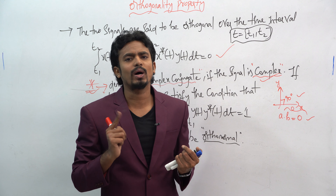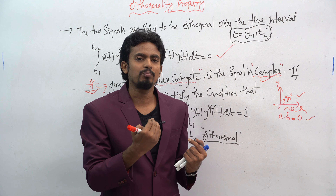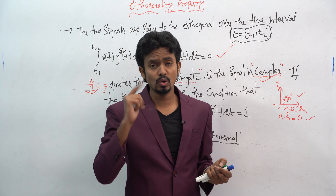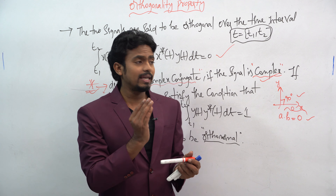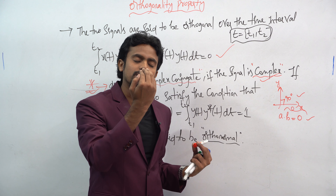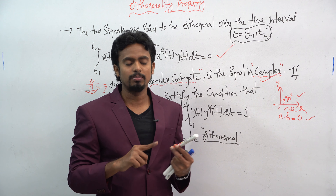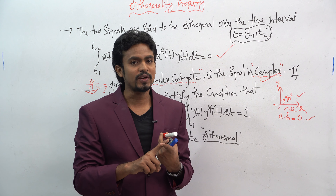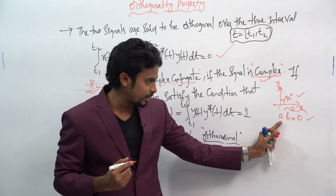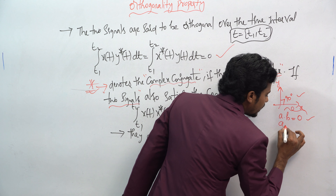In orthogonality, you check that x(t) into y-star of t equals 0. But in orthonormality, you take the signal x(t) and conjugate the same x(t) signal — checking whether you get 1 or not. If you get 1, the orthonormality property is satisfied. In most problems, you cannot directly get 1, so you have to do some manipulation to get the value 1.